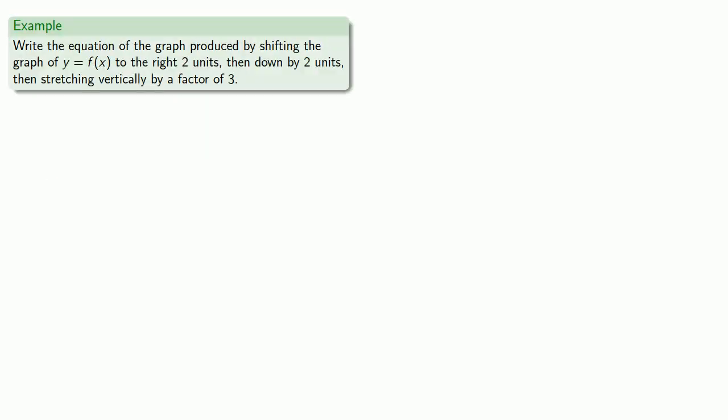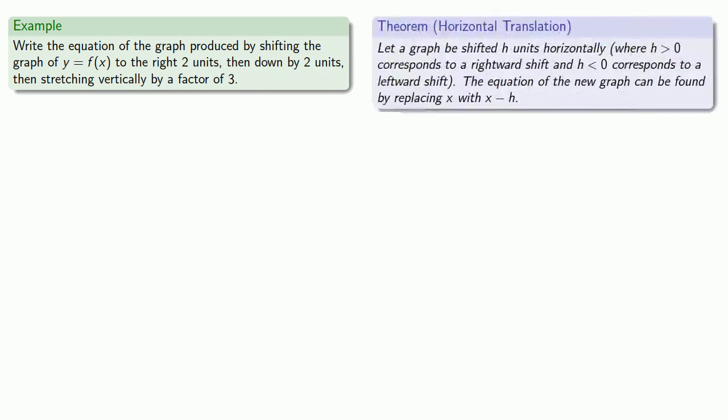For example, let's say we want to write the equation of the graph produced by shifting the graph of y equals f of x to the right two units, then down two units, then stretching vertically by a factor of three. First we want to shift the graph to the right by two units — that's a horizontal translation. Since we're going to the right by two units, we can find the equation of the new graph by replacing x with x minus two.